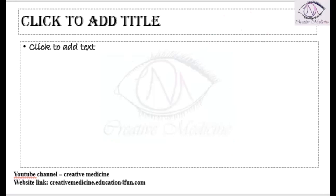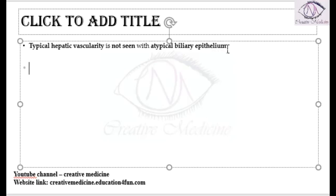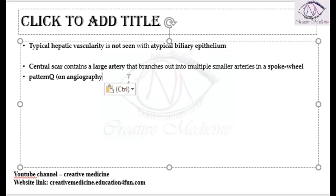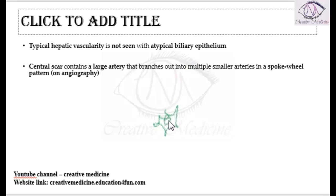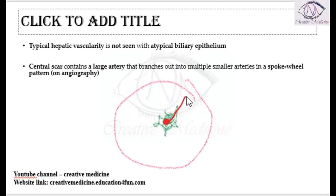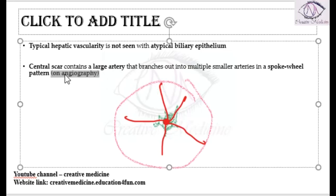In focal nodular hyperplasia, typical hepatic vascularity is not seen, with atypical biliary epithelium. The central scar contains a large artery with multiple small arteries giving a spoke wheel pattern on ultrasonography. This central scar contains a large artery which gives out multiple branches like a spoke wheel pattern, and this is mainly seen on angiography.